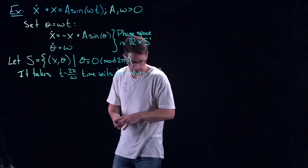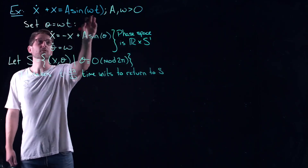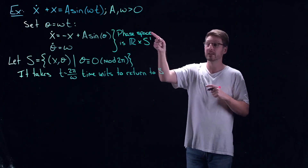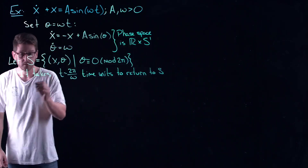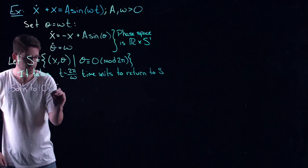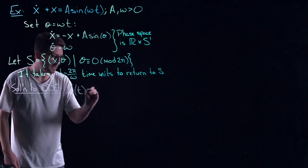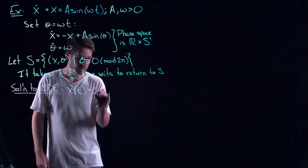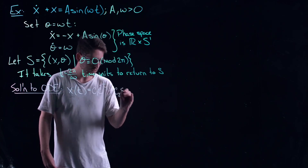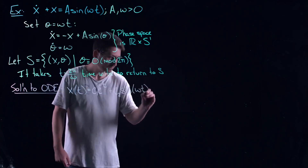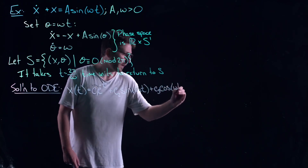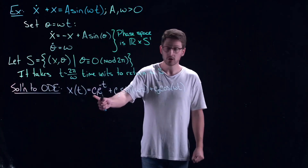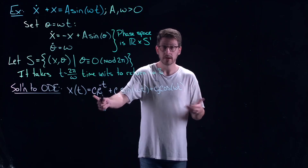I'm going to get you to go back and look at my lecture series on ordinary differential equations because you can solve that ODE exactly. The solution using variation of parameters is X(t) = C1·e^(−t) + C2·sin(ωt) + C3·cos(ωt). C1 comes from the initial condition — that's where you start, what your initial value of X is. C2 and C3 are the parameters determined by A and ω.